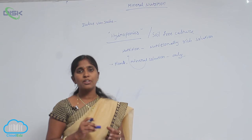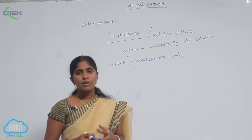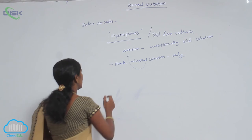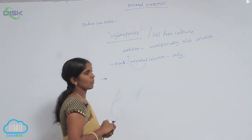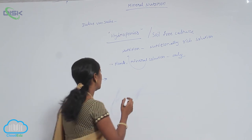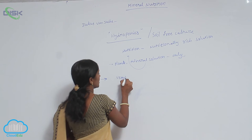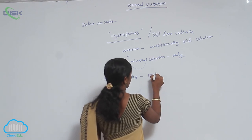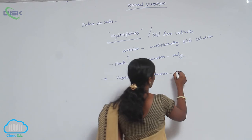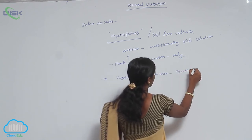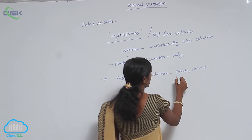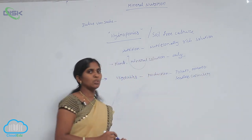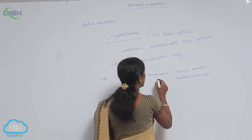Hydroponics is a technique for growing plants in the presence of a nutritional solution without soil. Later, commercially, many vegetable crops were developed for high production using hydroponics — for example, potato, tomato, and seedless cucumber. By cultivating these plants through hydroponics, the highest production is achieved.